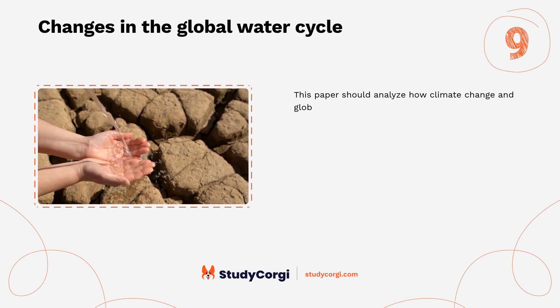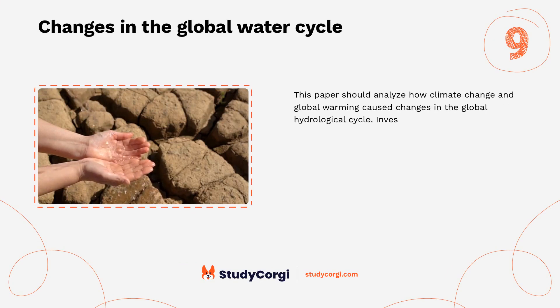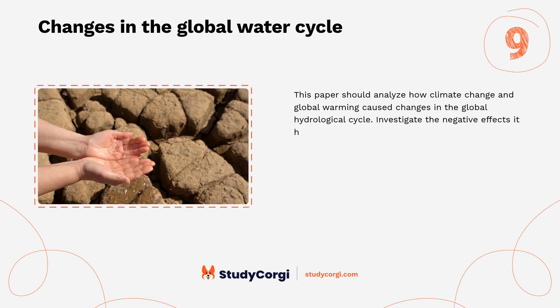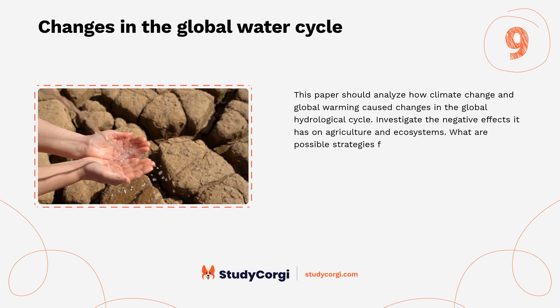Changes in the global water cycle. This paper should analyze how climate change and global warming cause changes in the global hydrological cycle. Investigate the negative effects on agriculture and ecosystems, and discuss possible strategies for intervention.